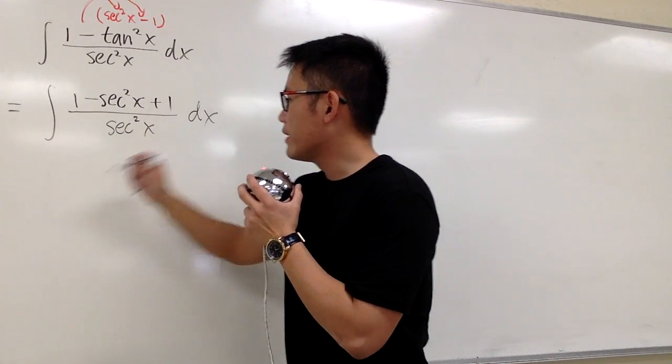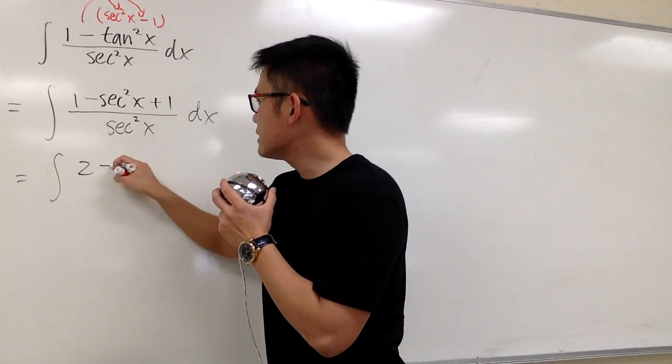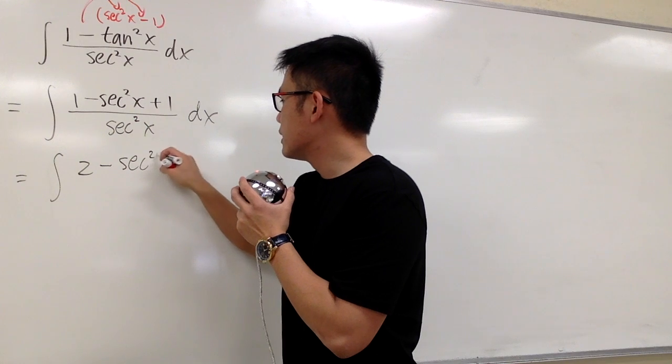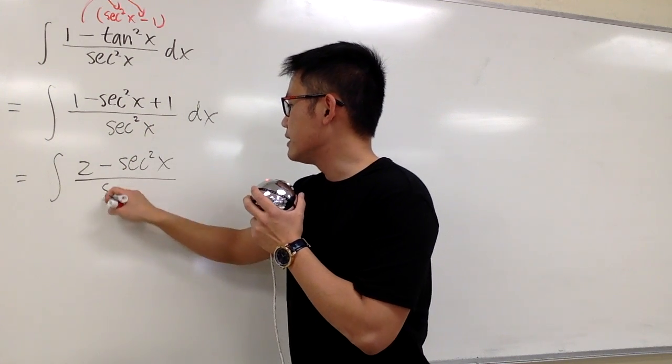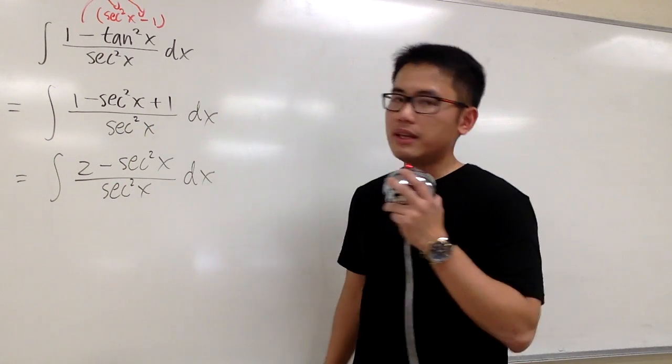1 plus 1, that's equal to 2, minus the secant square x, over this secant square x on the denominator, and we have the dx.